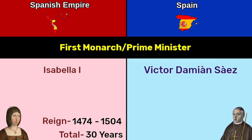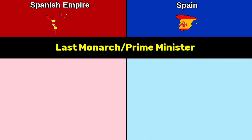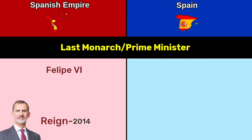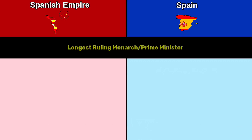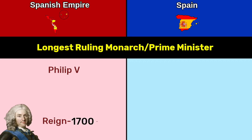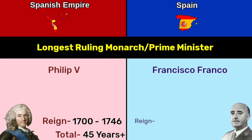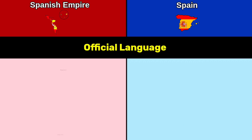First monarch or prime minister — Isabella I, reign 1474 to 1504, total 30 years. Shortest reign: Victor Damien Saiz, reign 1823, total 13 days. Last monarch or prime minister — Philippe VI, reign 2014 to 2022, total 8 years; Pedro Sanchez, reign 2018 to 2022, total 4 years. Longest ruling: Philip V, reign 1700 to 1746, total 45 years; Francisco Franco, reign 1938 to 1973, total 35 years.